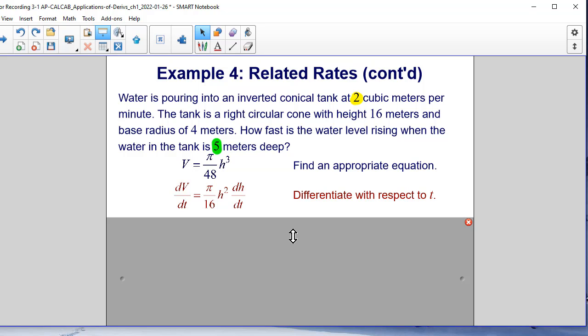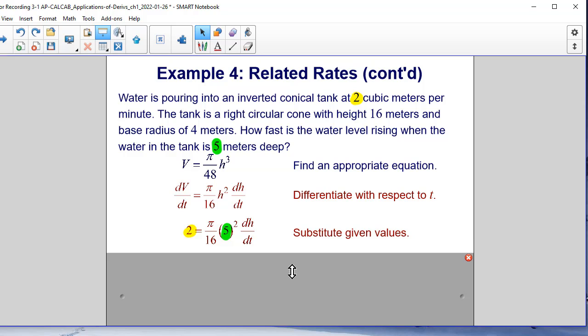Next we can substitute our values. You can see I highlighted the 2 and the 5. 2 is my change in volume, that's my dV/dt. And height is the height I want to know, the 5. That's how the rate is changing at that instant. So dh/dt at the instant the height is 5 meters, we solve for dh/dt and that gives us 32/(25π).